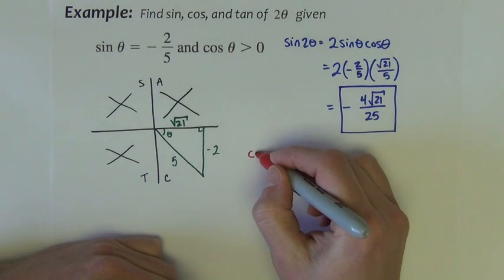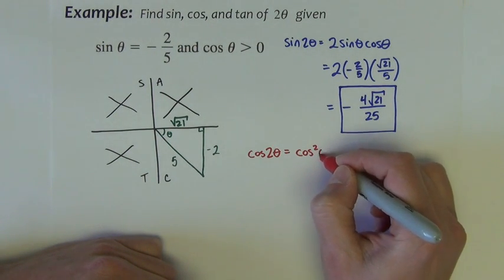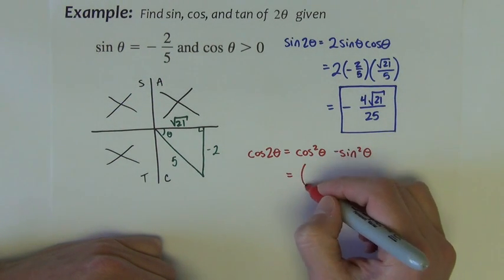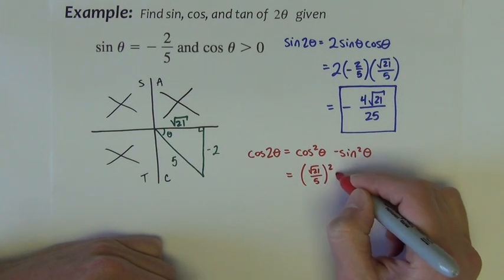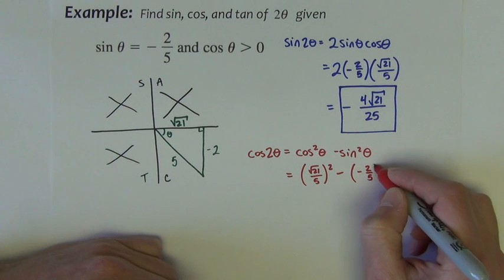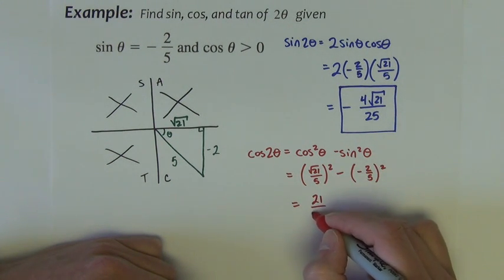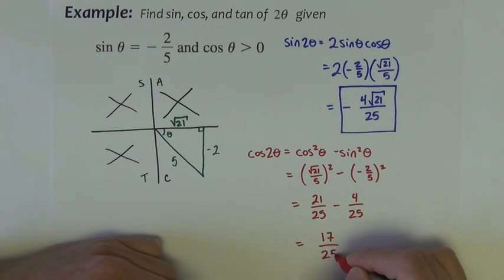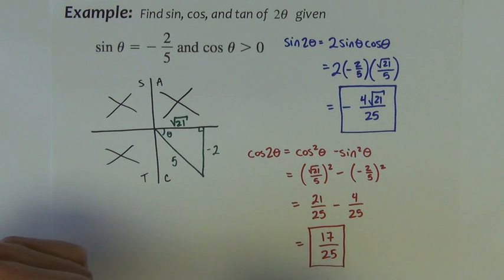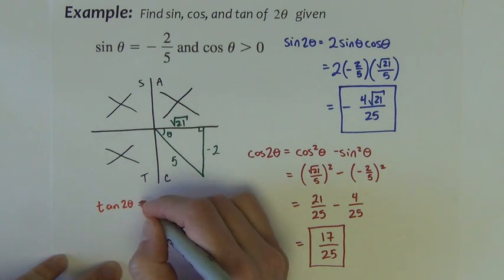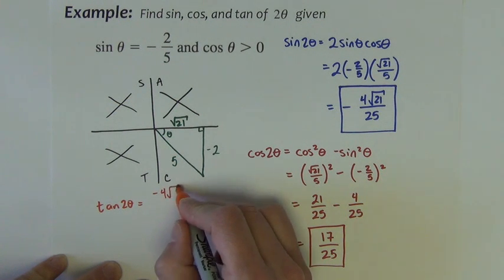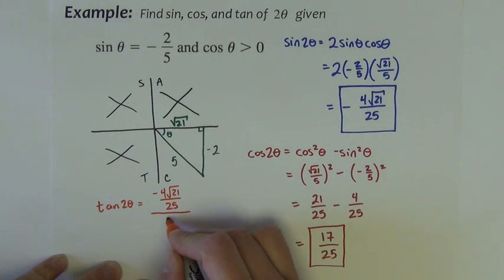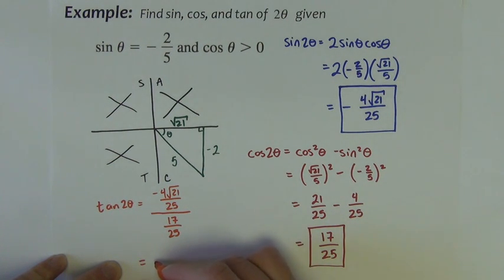Next we could go with the cosine of 2 theta. I'm going to use again the same formula, cosine squared minus sine squared. So, cosine squared is the square root of 21 over 5 squared. Sine, negative 2 over 5 squared. Squaring the radical just takes away the radical. So, 21 twenty-fifths minus 4 twenty-fifths. And we end up with 17 twenty-fifths. And for the tangent of 2 theta, I'm just again going to take my sine of 2 theta divided by my cosine of 2 theta, which results in negative 4 square root of 21 over 17.